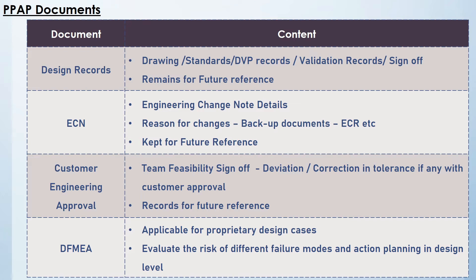The fourth document is Design FMEA, applicable only for proprietary design cases. For job work and other customer-designed cases, this will not be applicable for the supplier, since the supplier is not responsible for the design of the product. In Design FMEA, risk is evaluated based on failure modes. Action planning is done at the design level, and minor corrections if required are addressed. All complete review records and evidences are attached along with the FMEA.